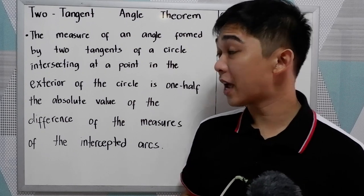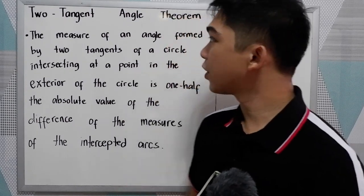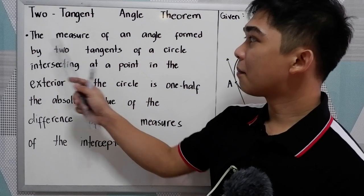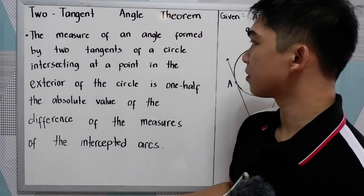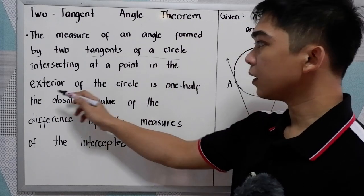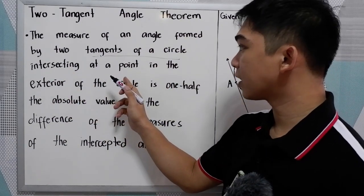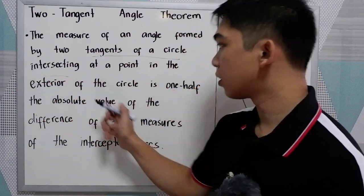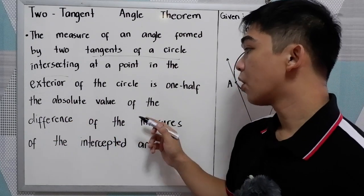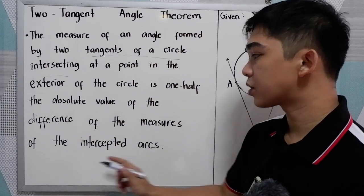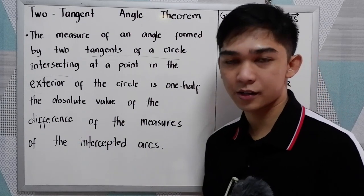So this will be our fourth theorem. The theorem states that the measure of an angle formed by two tangents of a circle intersecting at a point in the exterior of the circle is one-half the absolute value of the difference of the measures of the intercepted arcs.